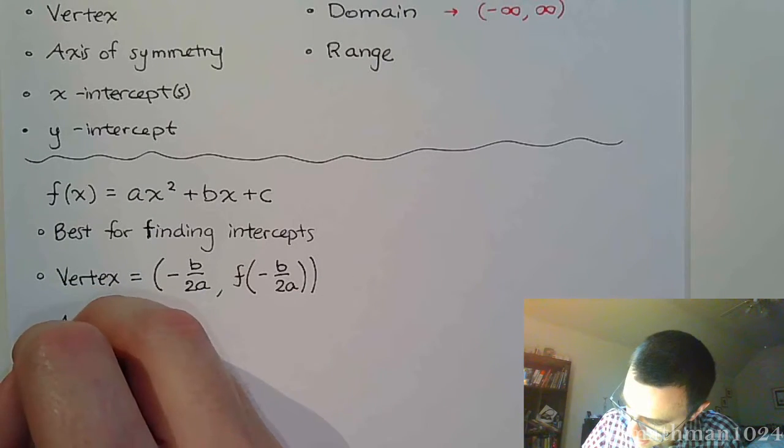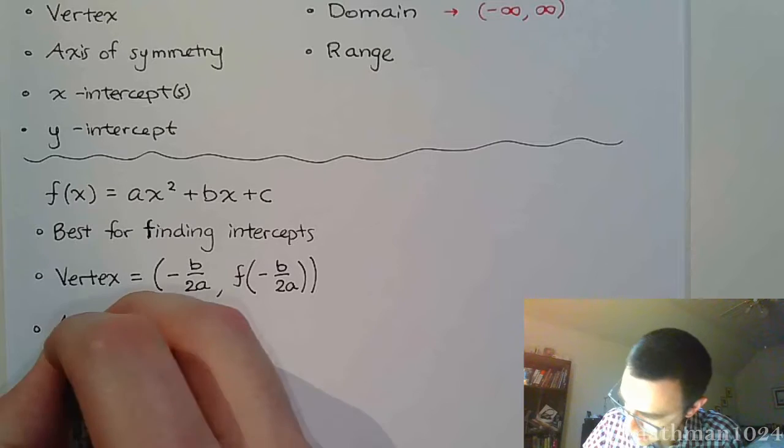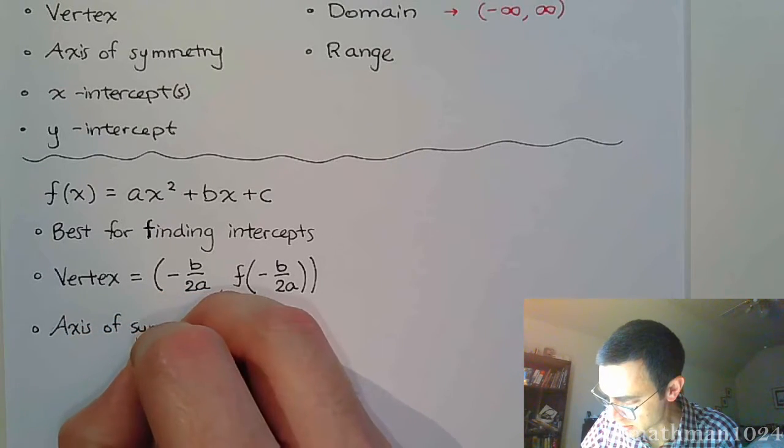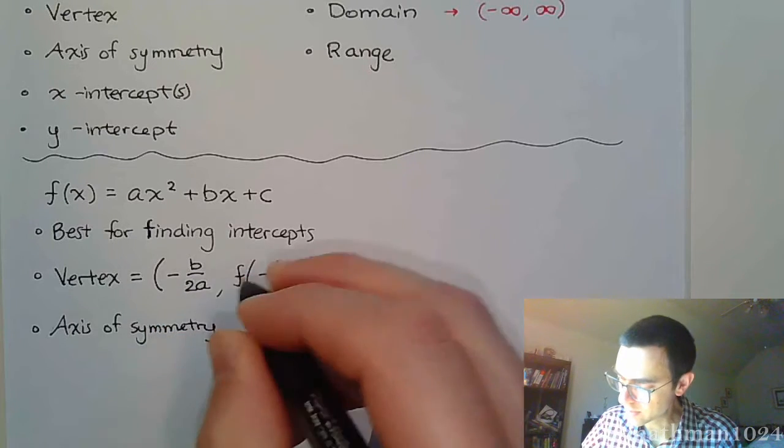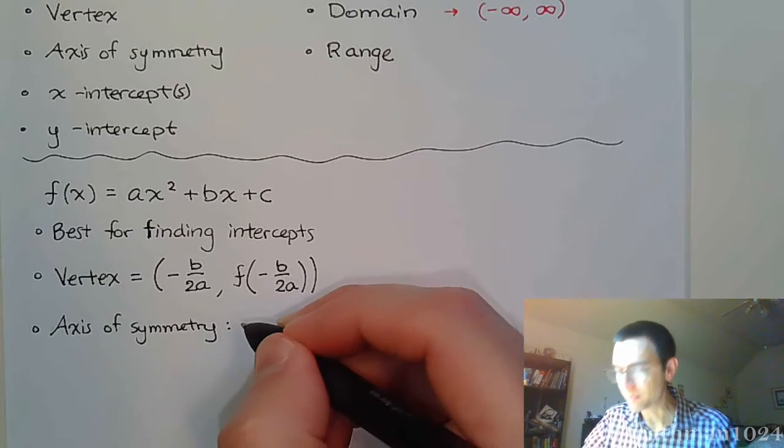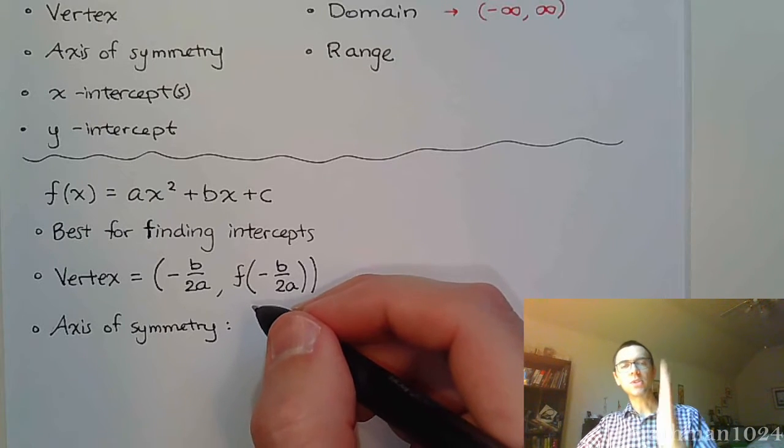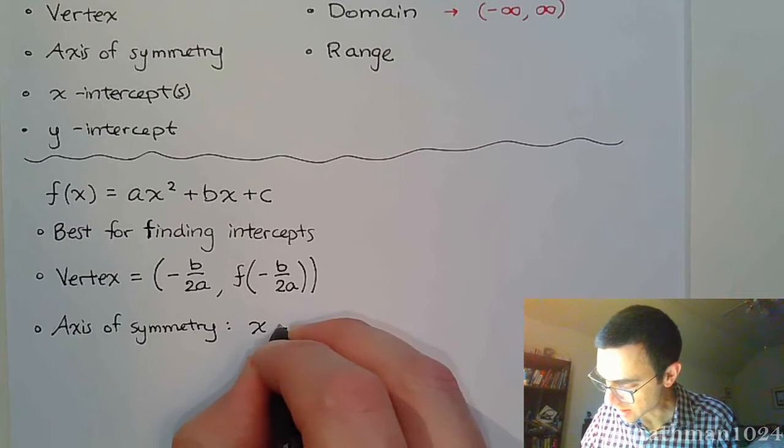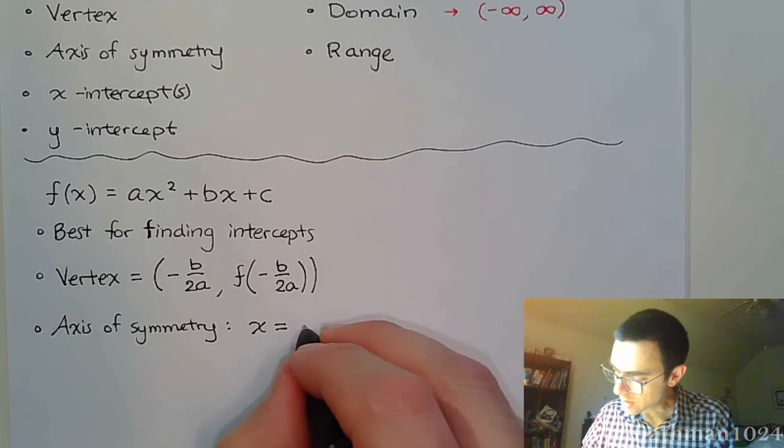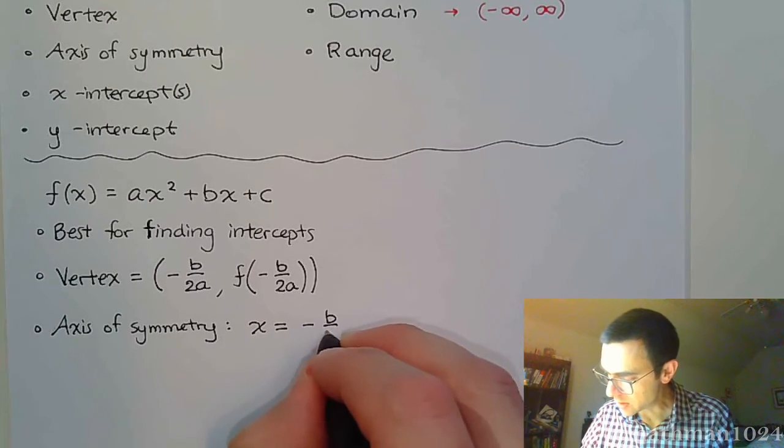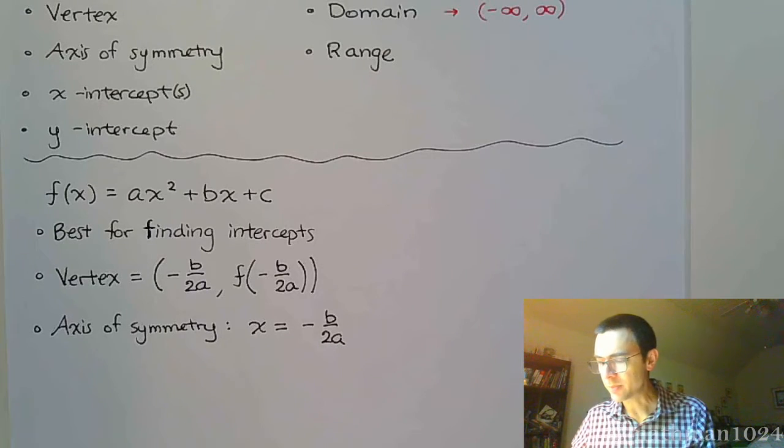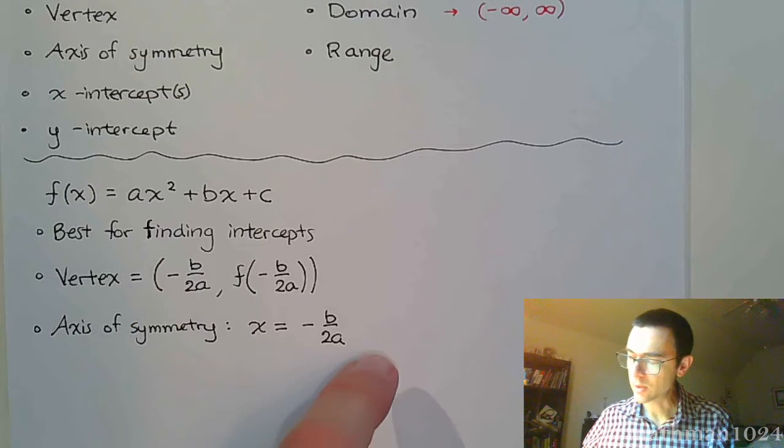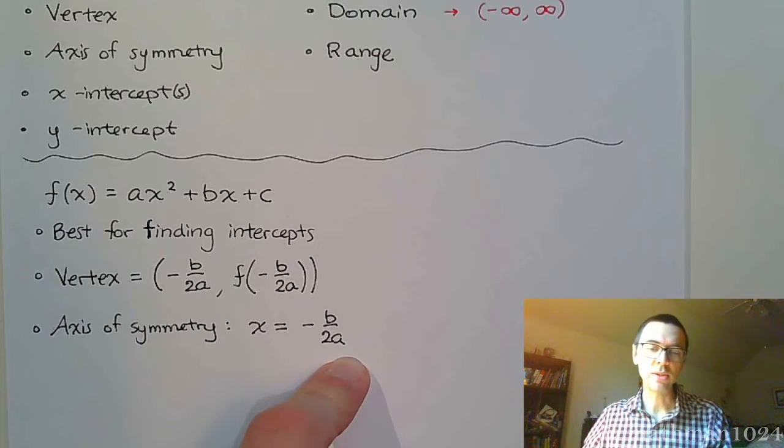Which then means that your axis of symmetry, your axis of symmetry, now keep in mind, axis of symmetry is going to be a vertical line, which means it takes on the form x equals, and x is going to equal negative b over 2a. So whatever this x value is, is going to be the same value that forms our axis of symmetry.